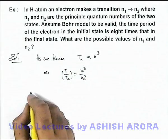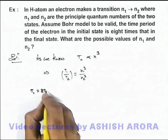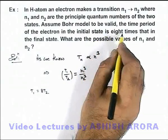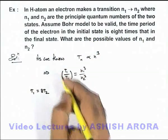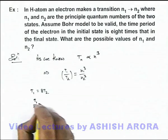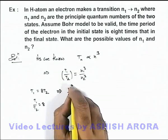And in this situation we are given that T1 is equal to 8 times that of T2, because we are given that in the initial state the time period is 8 times that in the final state. So if we substitute here T1 by T2 is equal to 8, we can see we are getting n1 by n2 cubed.